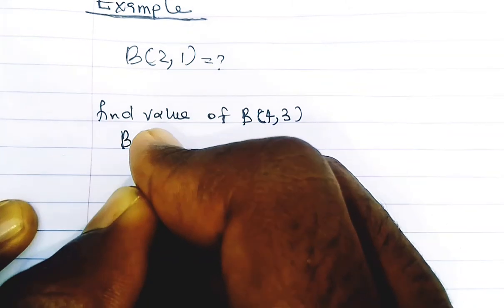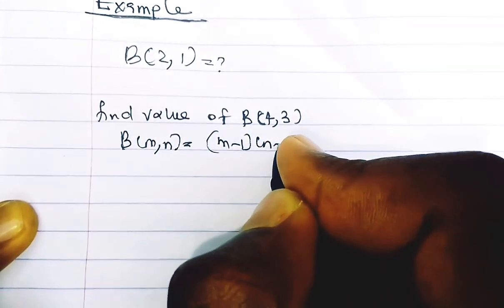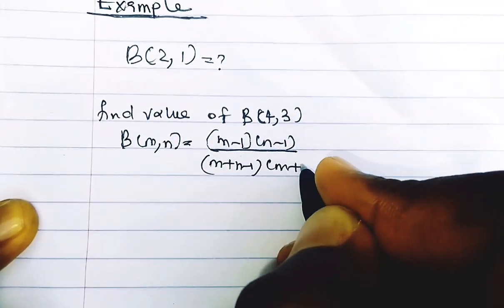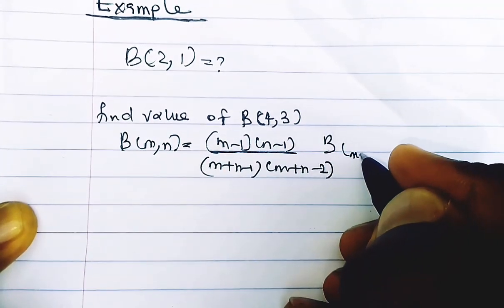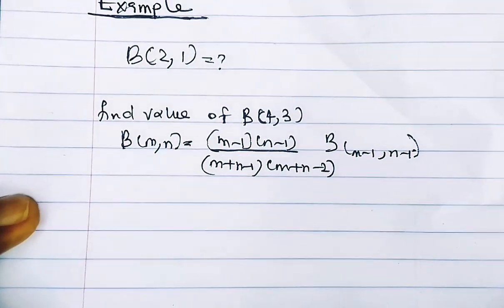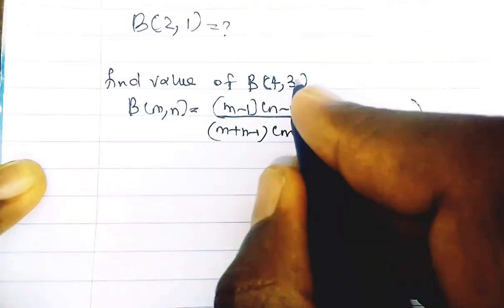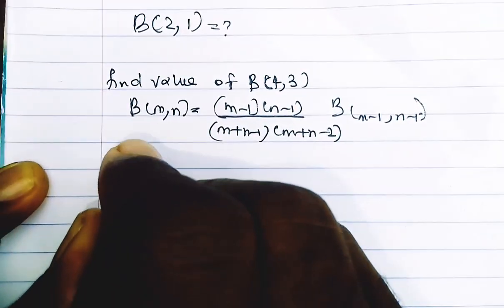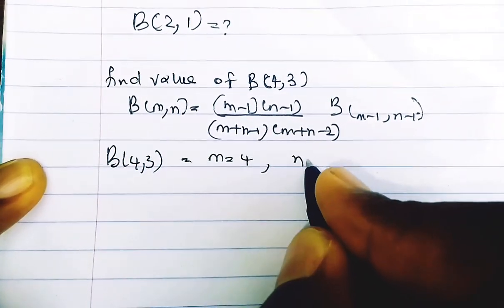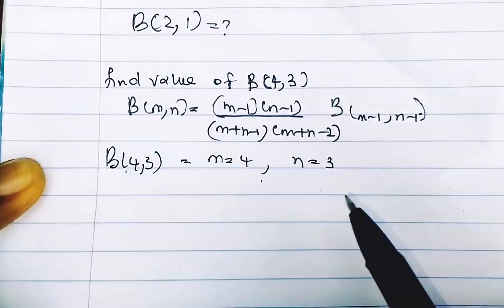From our previous video, we derived the formula: B(m, n) = (m−1)(n−1) / [(m+n−1)(m+n−2)] · B(m−1, n−1). Now from B(4, 3), comparing with the formula, my m is equal to 4 and my n is equal to 3.